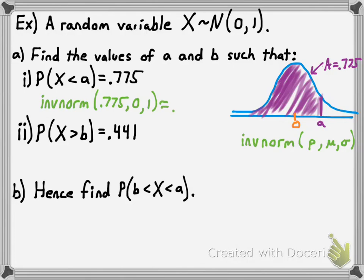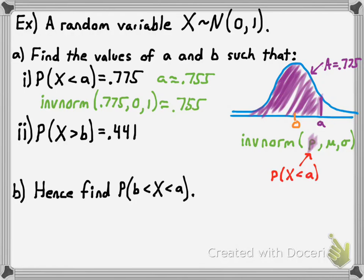The result is approximately 0.755 — that's the value of a. Now, one thing I cannot emphasize enough when using the inverse normal distribution: the value of p that you enter must always be the probability that your random variable x is less than whatever number a you're trying to find. It has to represent the area to the left of that value a.